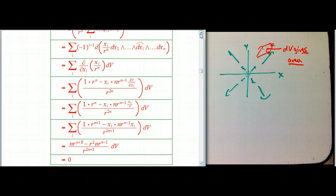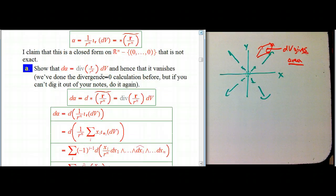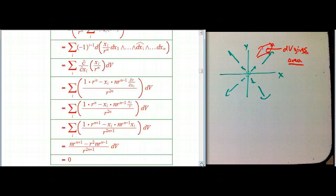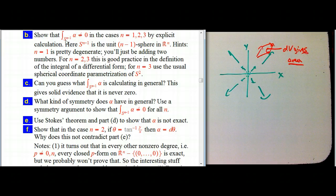So this is indeed a closed form — just by direct calculation, d alpha = 0. This is a really big deal: the vector field R/R^n is divergence-free, or equivalently this alpha is a closed (N−1)-form. But I claim that it is not exact. To show that, I'll show that its integral over a closed submanifold is not equal to zero — because if the form were exact and the manifold is closed, the integral would be zero by Stokes' theorem.